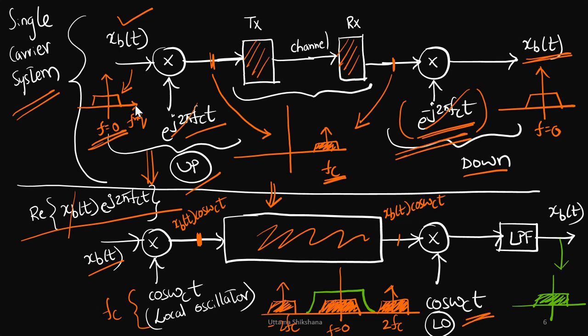Then what I get here is this signal multiplied by cos(ωct). So if you multiply and take the Fourier transform, you will see that the spectrum at this point would look like this. Is this still sufficient? Is this still getting back me xb(t)? No, because there are high frequency components here.